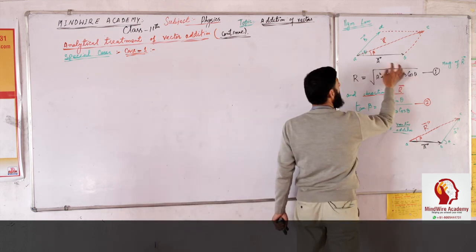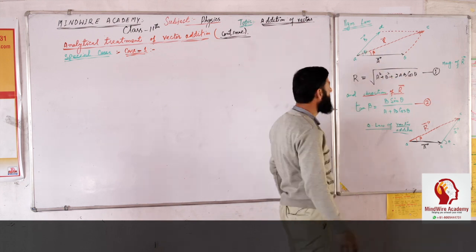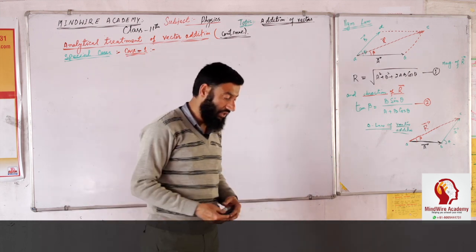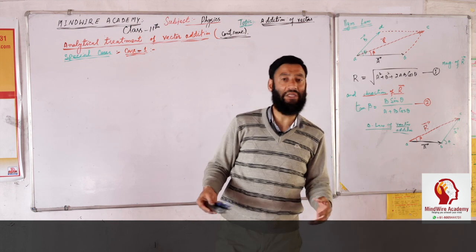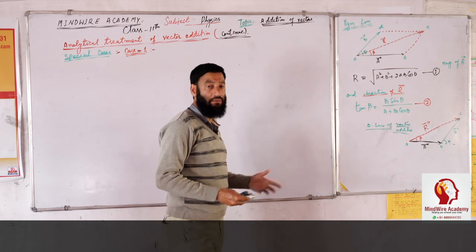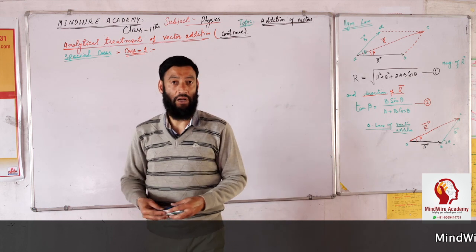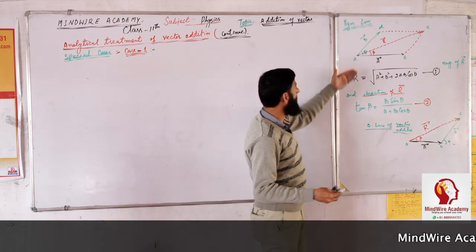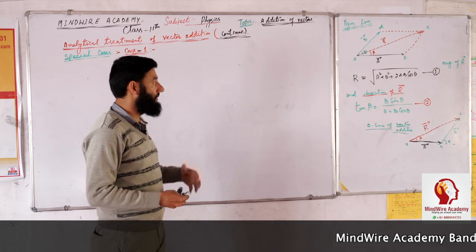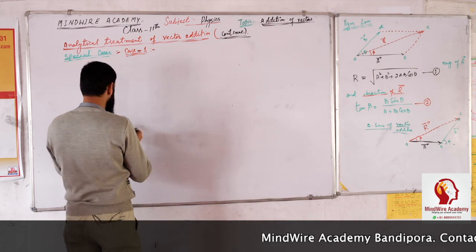Here theta is the angle between the two vectors, and theta can have any value — it can be 0, 30 degrees, 45 degrees, 60 degrees, or in radians it can be pi by 2, pi, or any angle. So there can be different cases, and all the cases will depend upon the value of the angle. We will now discuss some main special cases, the first of which is case one.